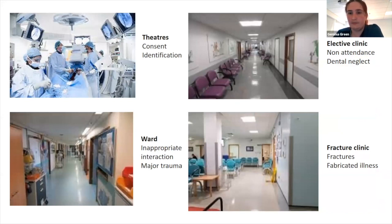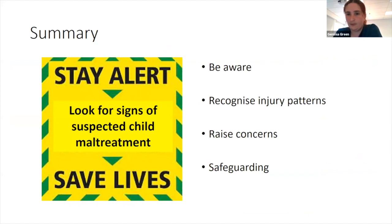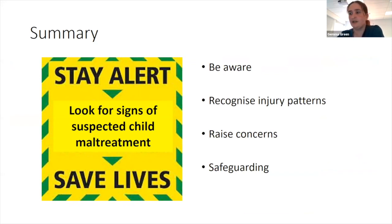In summary: on call, be vigilant, play detective, examine thoroughly, document carefully, and inform the safeguarding team. This applies at any level of seniority, in any hospital setting — theatre, elective clinic, fracture clinic, or the ward. Stay alert, look for signs of suspected maltreatment to save lives, recognise suspicious injury patterns, raise concerns, do your safeguarding training, keep it up to date, and be vigilant.